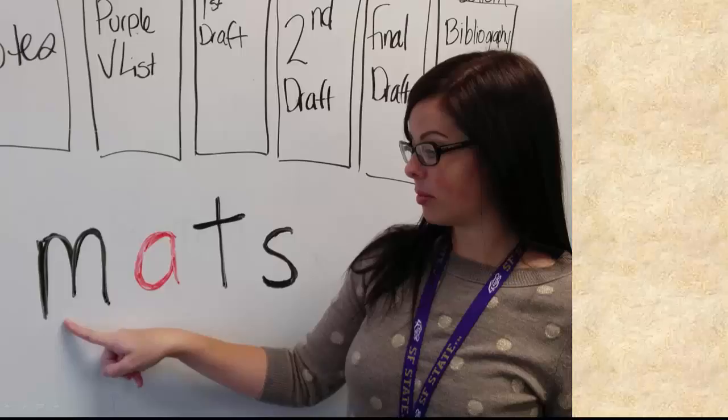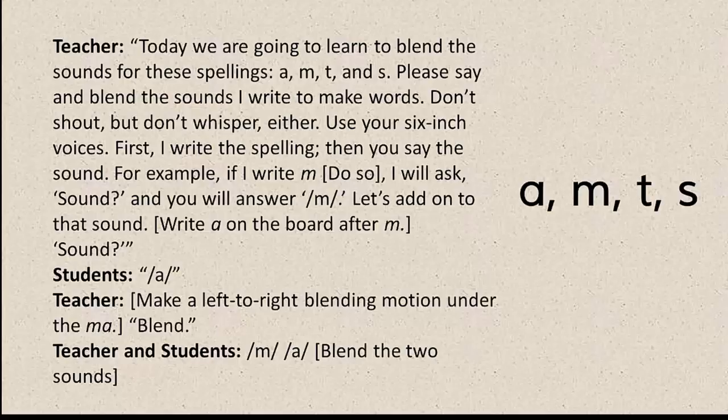Follow this script for the first sound-by-sound spelling blending activity: 'Today we are going to learn to blend the sounds for these spellings: /a/, /m/, /t/, and /s/. Please say and blend the sounds I write to make words. Don't shout, but don't whisper either — use your six-inch voices. First I write the spelling, then you say the sound. For example, if I write m, I will ask 'sound,' and you will answer /m/.